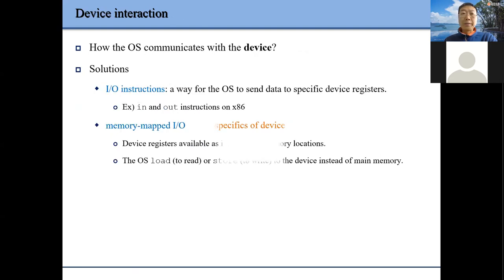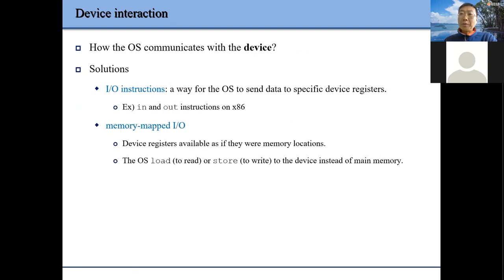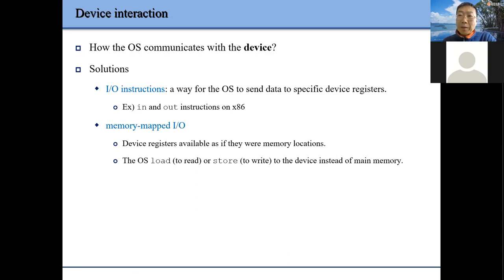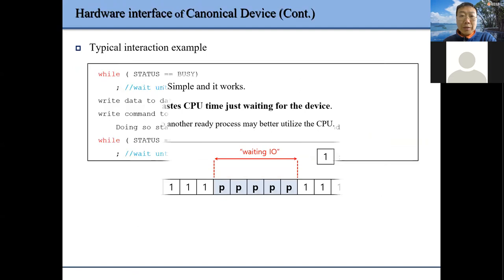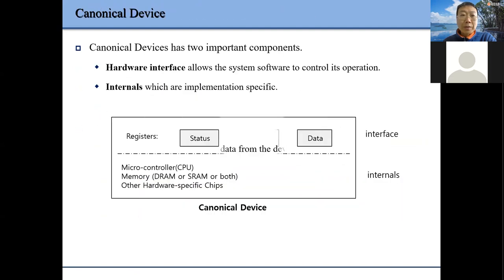We also talked about how, after we introduce the interface, we discuss how to find those registers. We can use IO instructions or memory instructions. This tells us how to access those interface registers — the status register, command register, and data register.